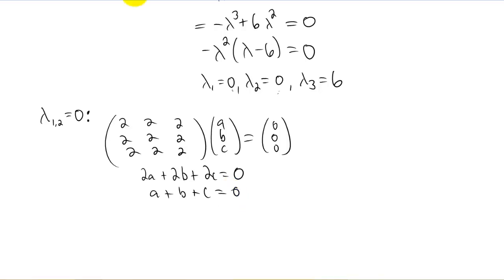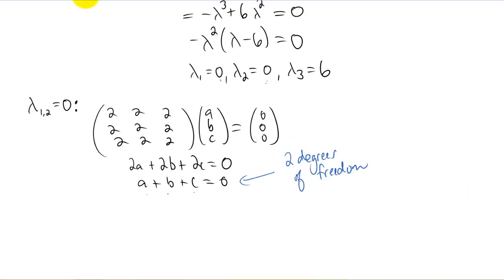In class we used the saying degree of freedom and that was the case where we had two unknowns and just one equation. In this case we actually have three unknowns and just one equation. So in this case it turns out that we actually have two degrees of freedom. So there's actually a technical way to do this. What we can do is we can solve this equation for c and then we can say we're free to choose a to be whatever we want and we can choose b to be whatever we want but c is going to be dependent on those two choices.